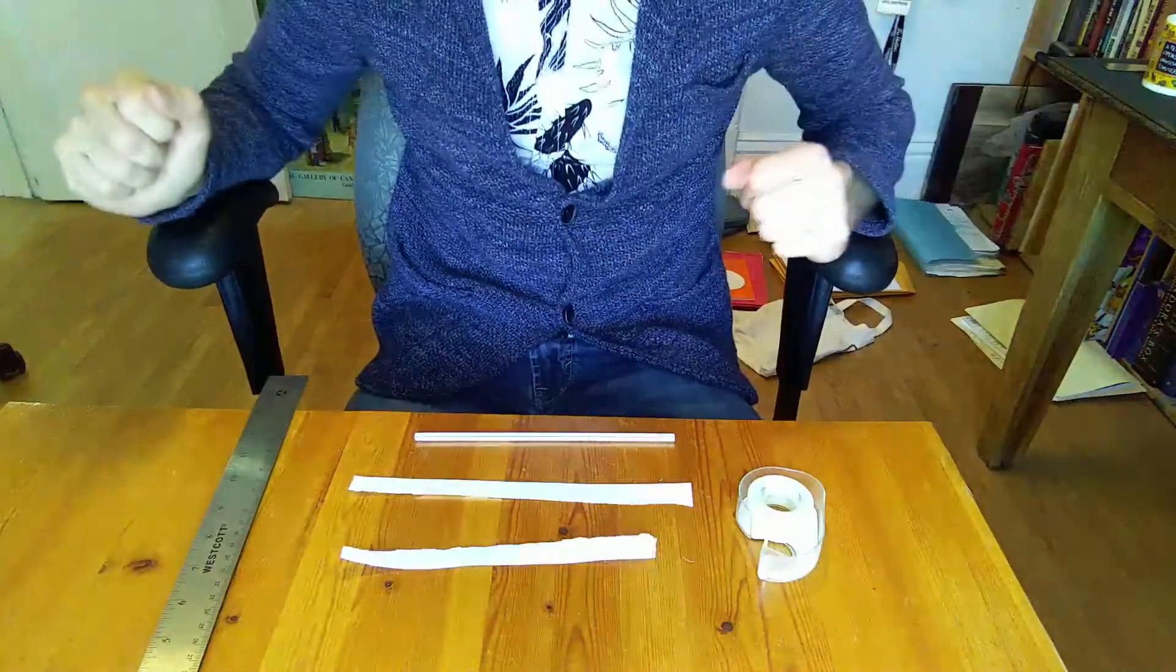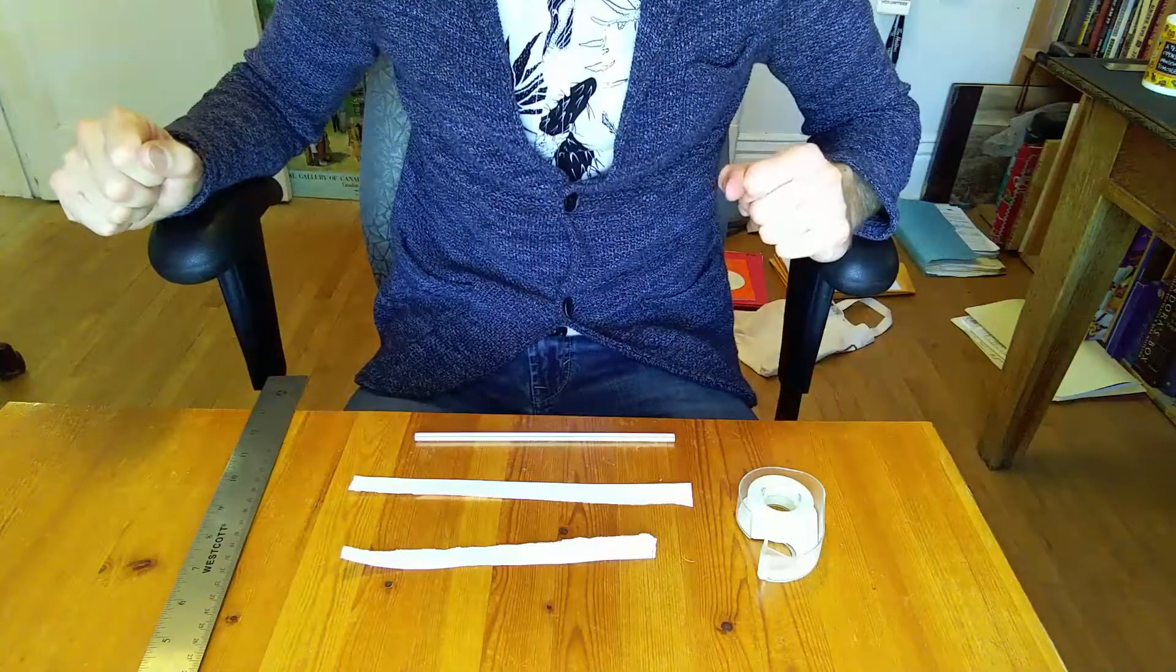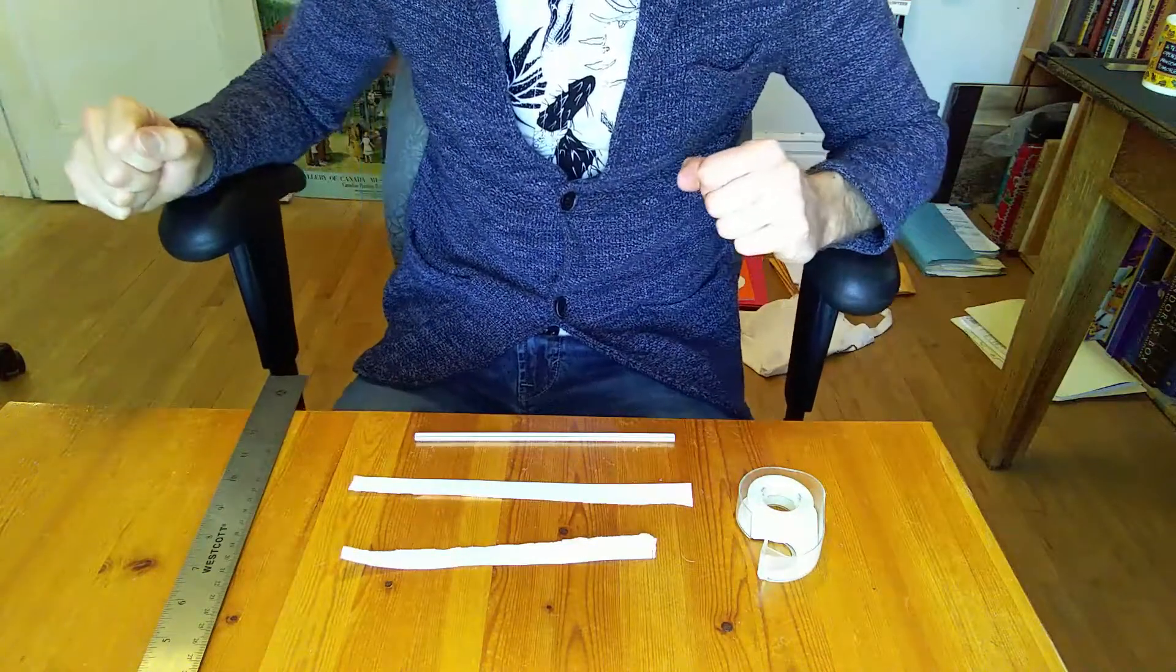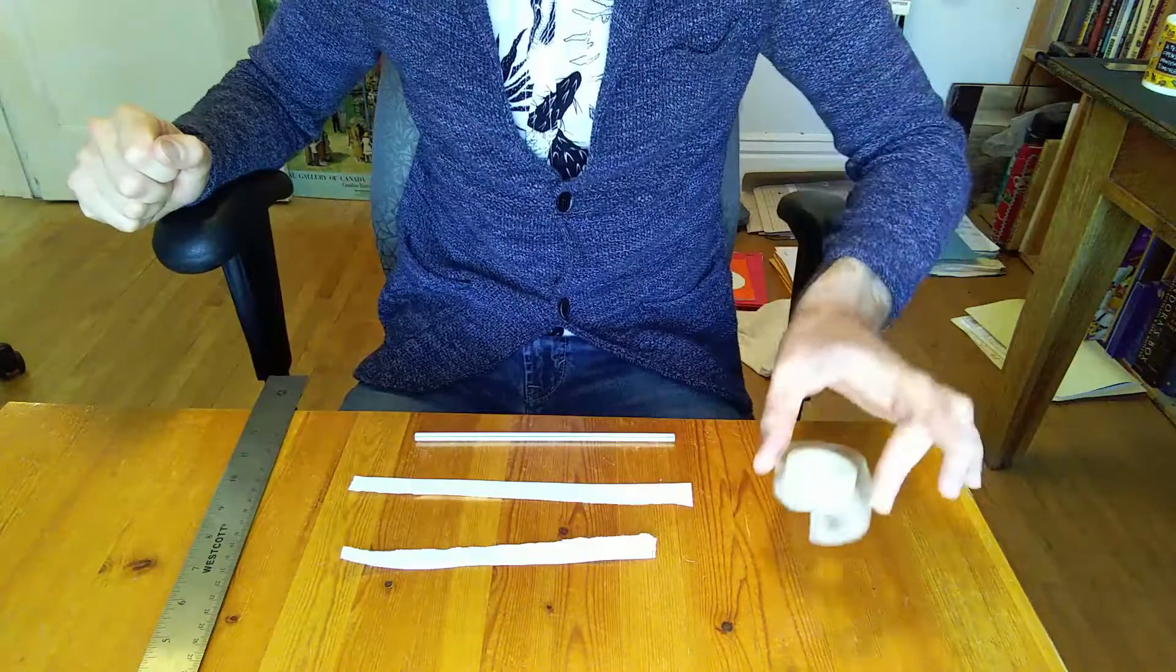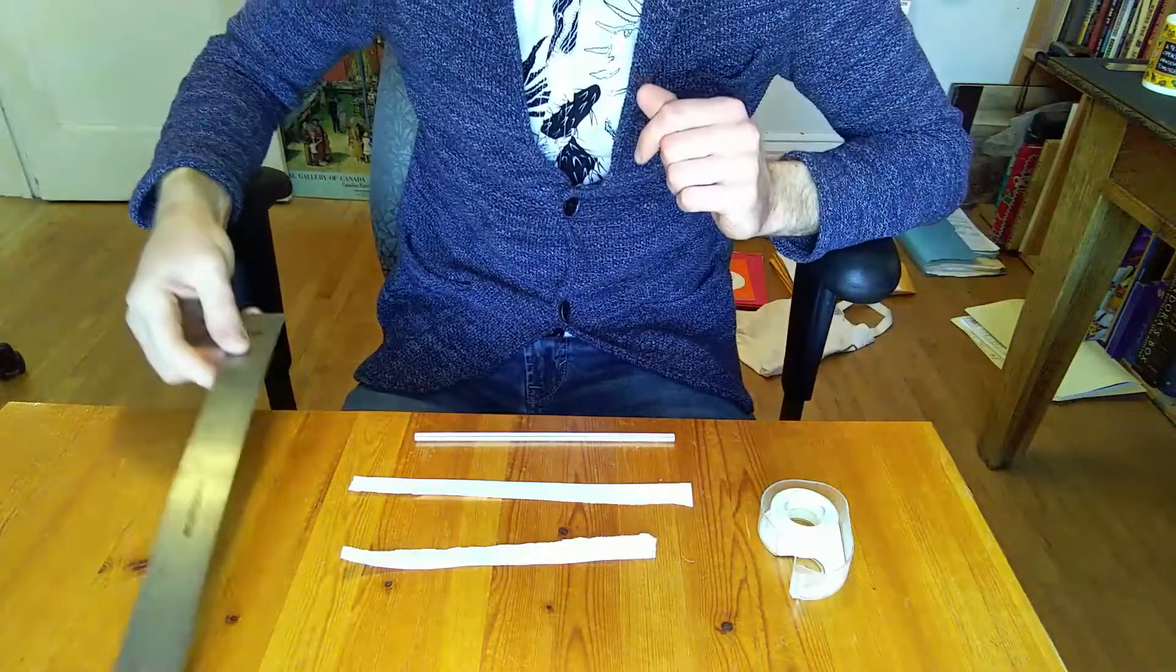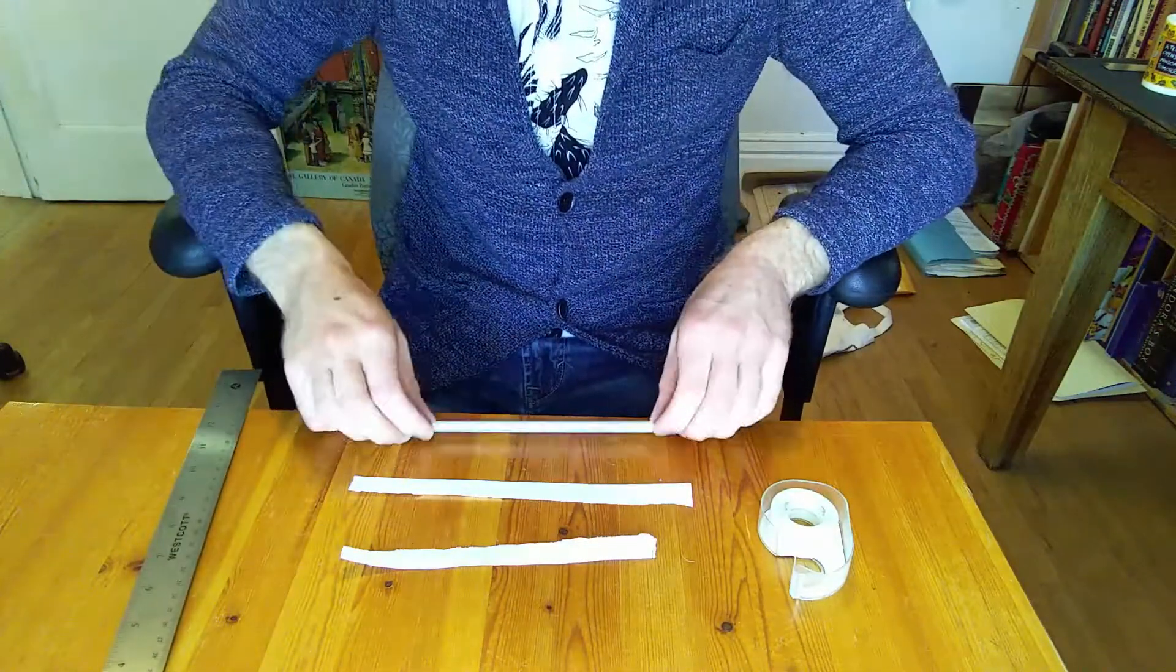The next experiment we're going to try is making a hoop flyer. And what are you going to need for that? Well you're going to need some tape. You're going to need a ruler for measuring. You're going to need a straw.